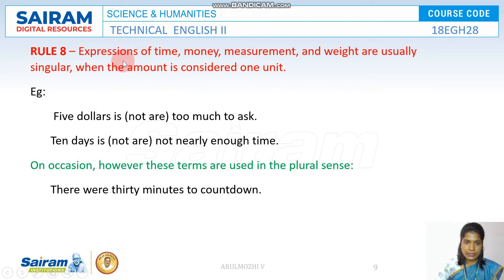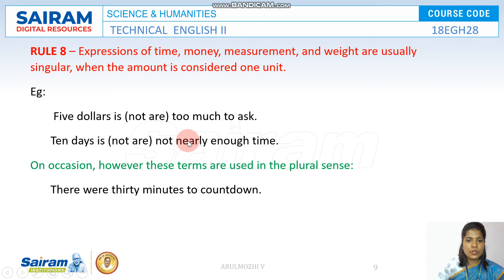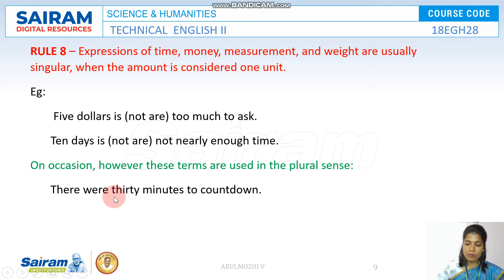I told you in the previous slide that expressions of time, money, measurement, and weight should always take a singular verb. For example: 'Five dollars is too much to ask.' 'Ten days is not nearly enough time.' On special occasions, like when you count minutes one by one, they are individually counted, so you use a plural verb.